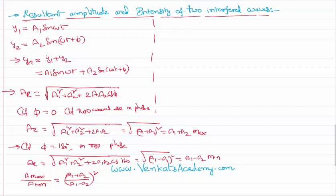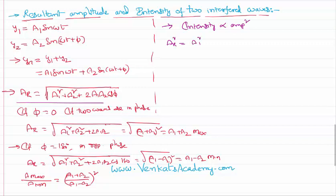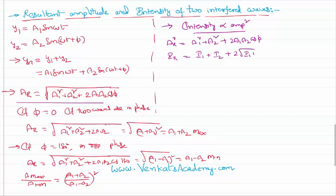Suppose we are interested in learning about the intensity of the waves, because intensity is another useful measure. We know that intensity is directly proportional to the square of amplitude. So from the amplitude equation, if we square it, A resultant squared equals a1 squared plus a2 squared plus 2·a1·a2·cos(phi). Replacing amplitude squared with intensity, the proportionality constants cancel, giving: I resultant equals I1 plus I2 plus 2·root(I1·I2)·cos(phi).